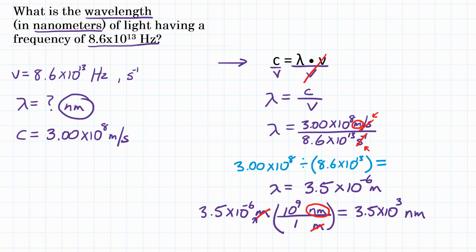Make sure you have times 10 to the 3rd. If not, check the order of operations in your calculator. So final answer: What is the wavelength in nanometers of light having a frequency of 8.6 times 10 to the 13th hertz? That would be 3.5 times 10 to the 3rd nanometers.